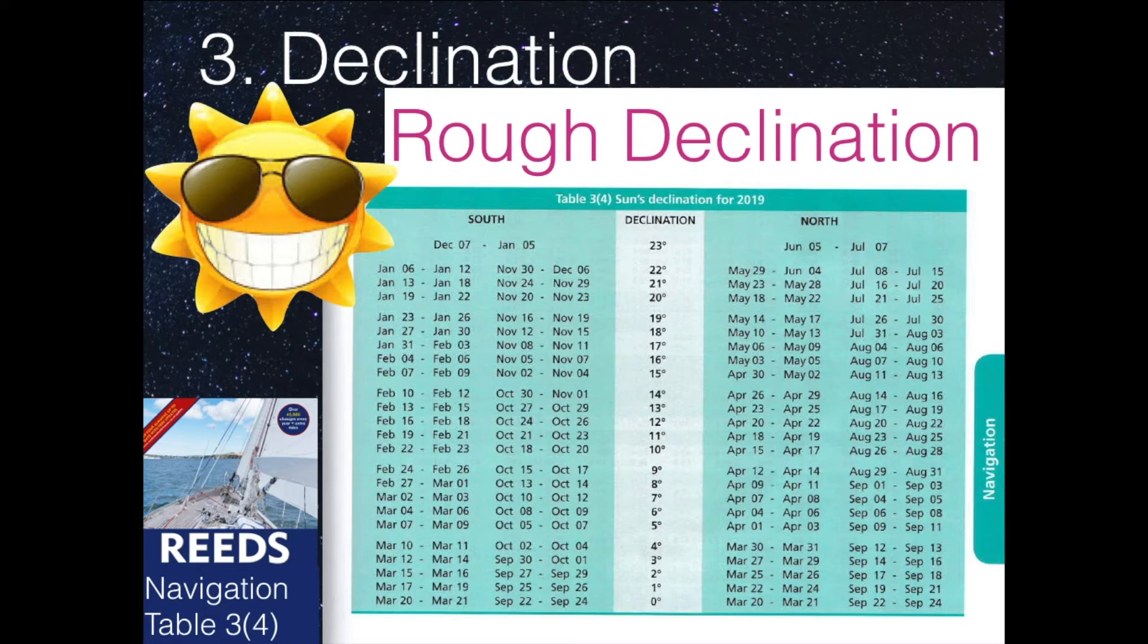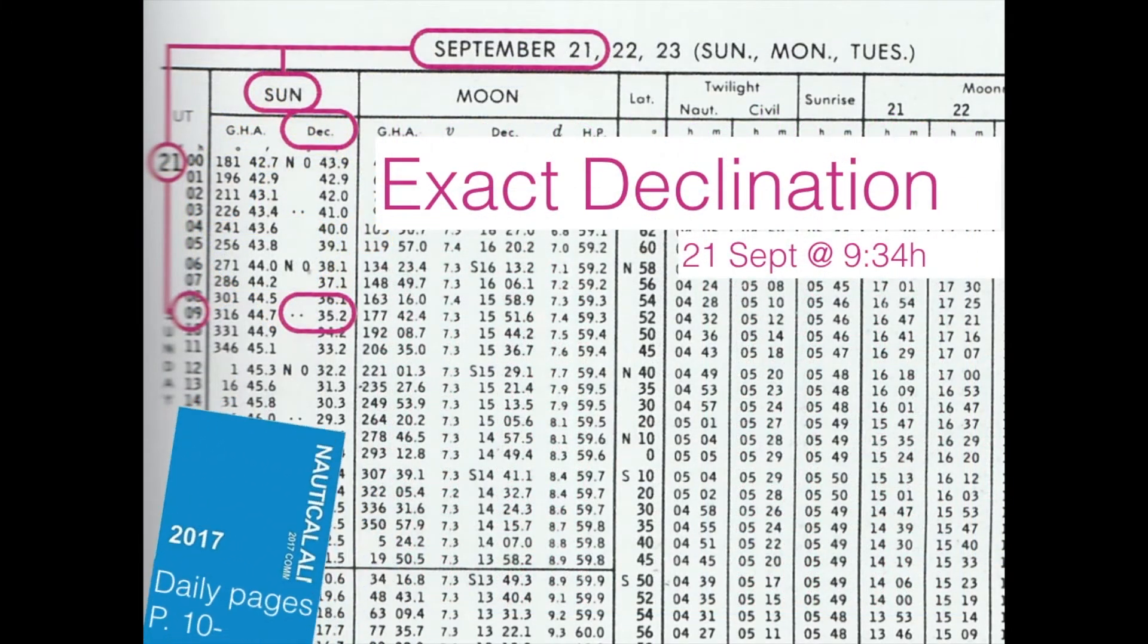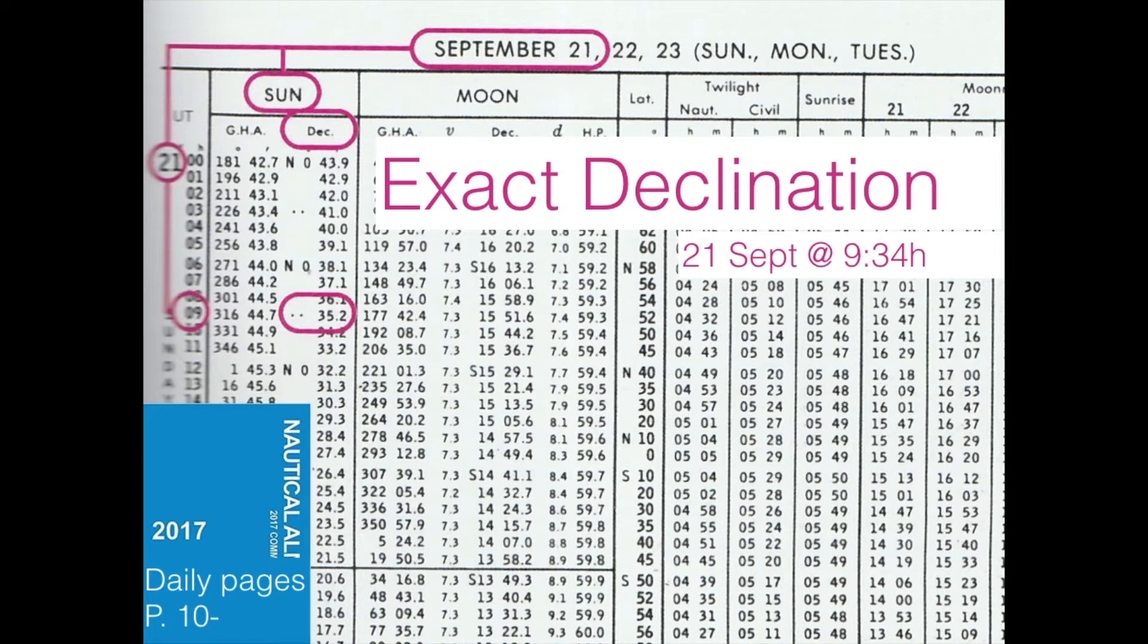If you want to have it more accurate, your latitude, than by one degree, you should find it more exactly, and not only by the day, but also by the hour. And this you do on the daily pages in the nautical almanac.